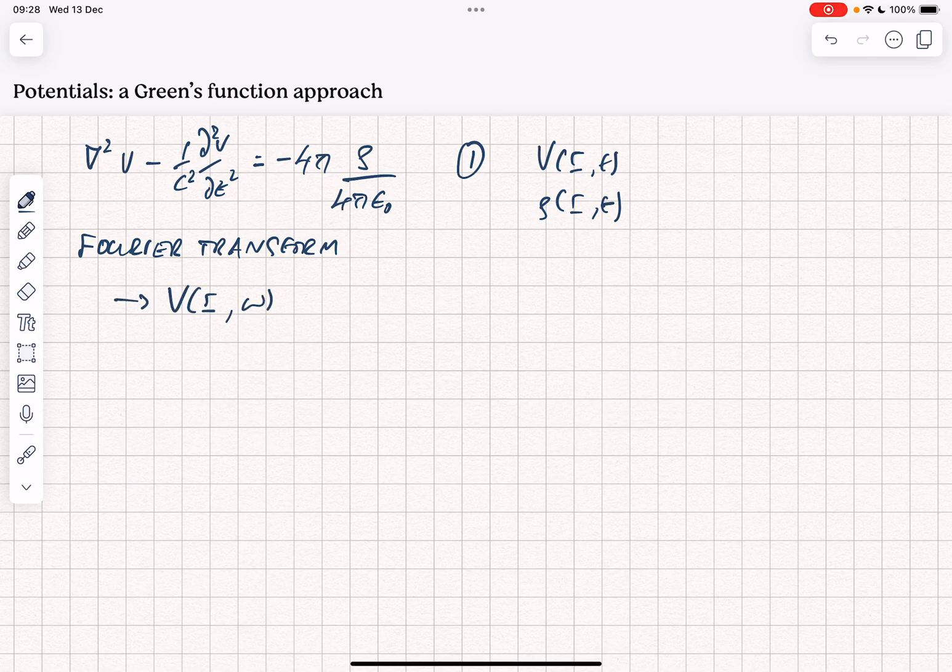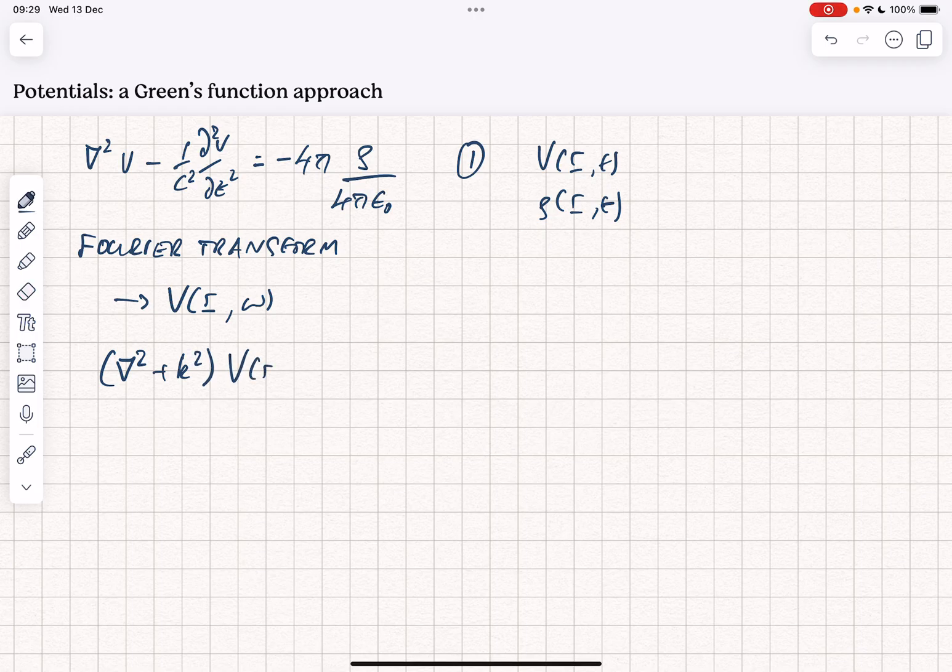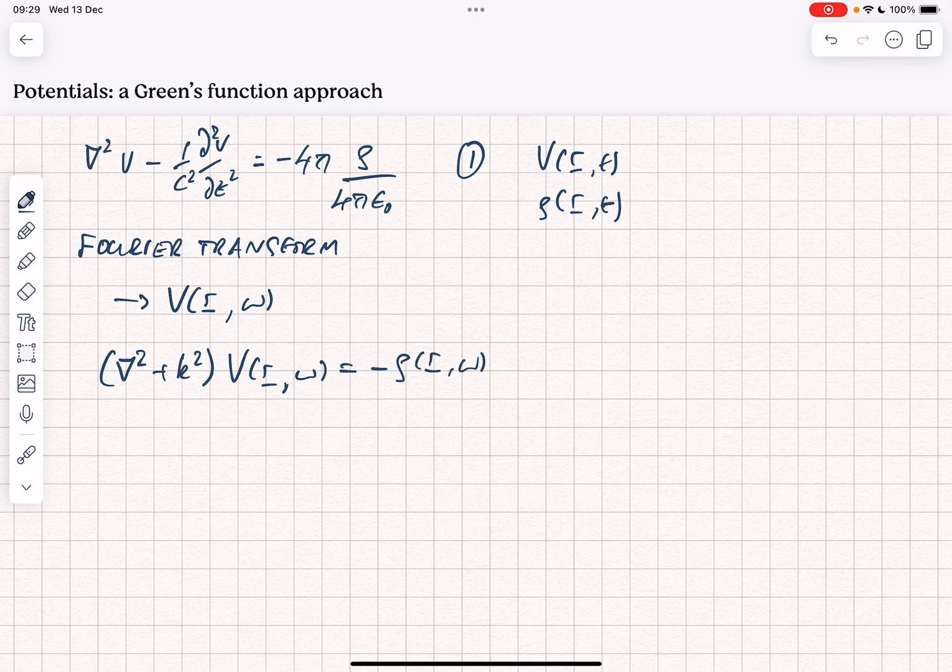Using that we can rewrite equation 1 as the inhomogeneous Helmholtz wave equation. We have del squared plus k squared v of r comma omega equals minus 4 pi rho of r comma omega over 4 pi epsilon 0, so of course we have to transform rho as well.